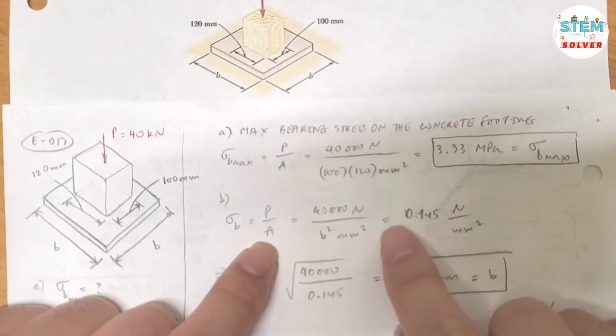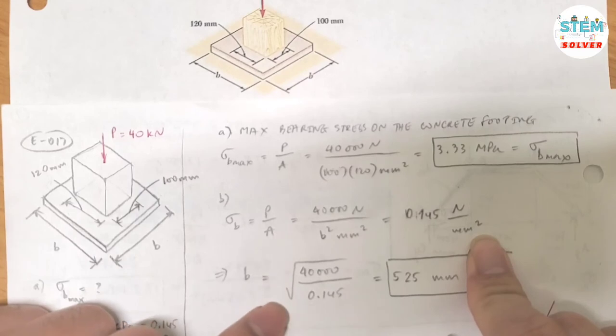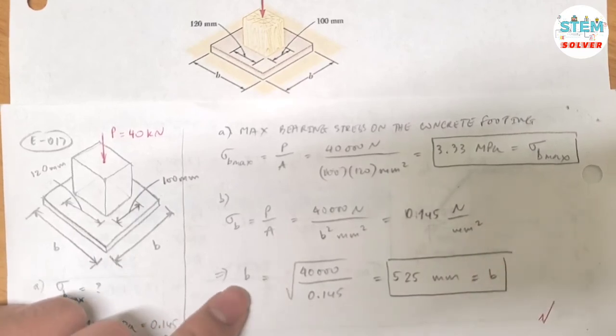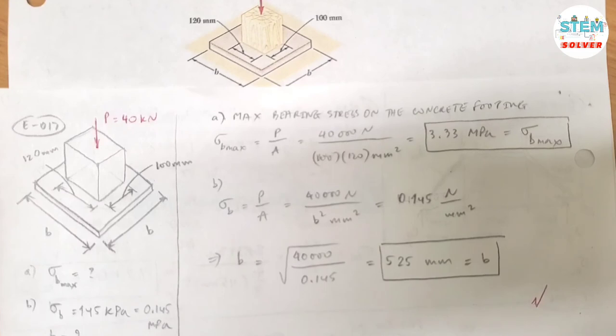And that is equal to the maximum stress, which is 0.145 N per meter squared. So for B, I got B equals 525 mm. That is your final solution.